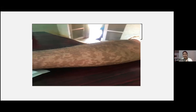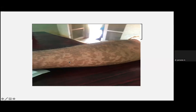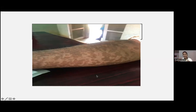This lesion is hyperpigmented with polycyclic borders — this is tinea versicolor. You may have seen hypopigmented cases of tinea versicolor, but this is the pigmented version. Two types of tinea versicolor exist: pigmented and non-pigmented. What you are seeing here are the hyphae of the organism Malassezia furfur.